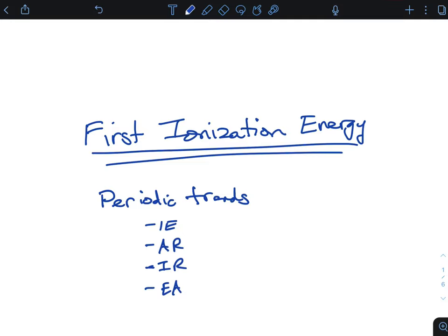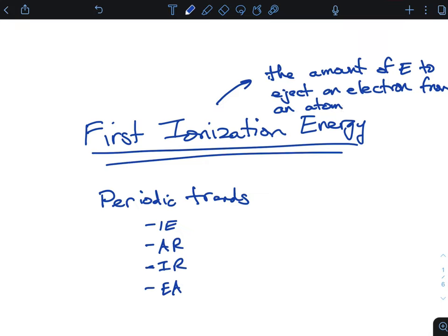The key thing for first ionization energy is, first off, let's define what it is. First ionization energy is the amount of energy we need to eject an electron from either an atom or an ion. I guess first ionization energy is technically just from an atom. Not worry about the semantics of it. It's how much energy does it take to kick an electron out.